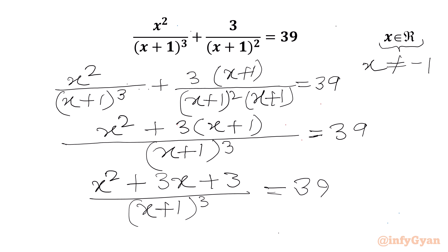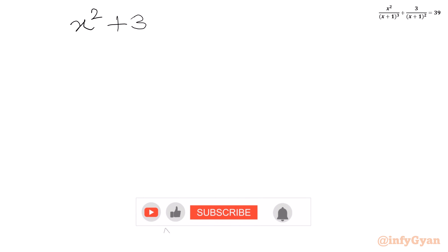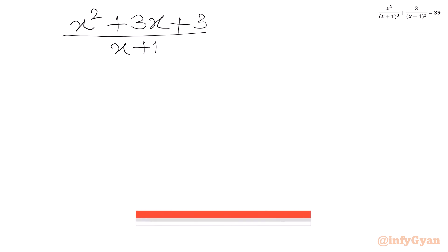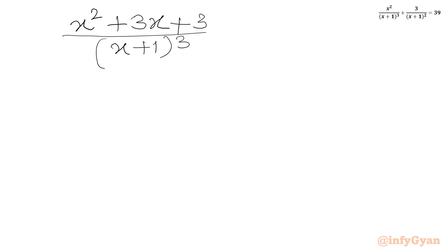We can write x² + 3x + 3 over (x+1)³ equal to 39. Now let's split 3x — I will write 3x as 2x plus x.